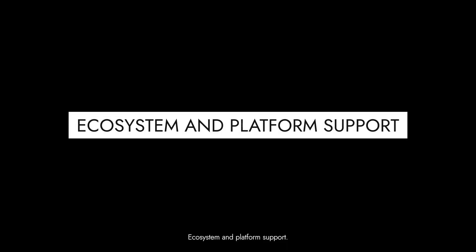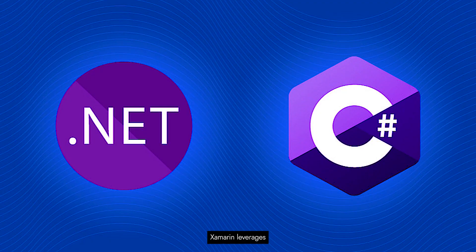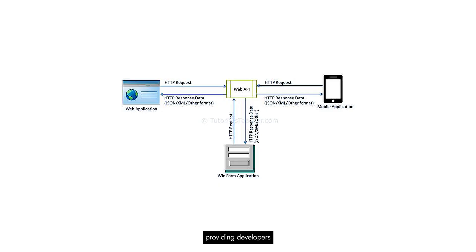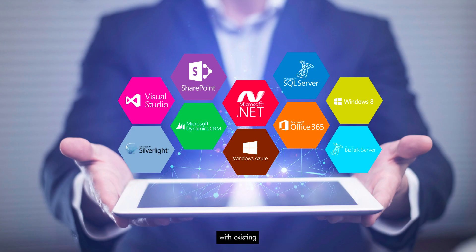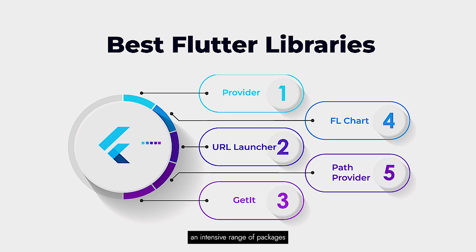Now let's talk about the ecosystem and platform support for Xamarin and Flutter. Xamarin leverages the vast ecosystem of .NET and C#. It integrates seamlessly with Visual Studio, providing developers with comprehensive tools and access to native APIs and libraries. This allows for deeper integration with existing Microsoft technologies. Flutter, backed by Google, offers outstanding integration with various Google services. Also, the Flutter ecosystem provides an extensive range of packages and libraries, permitting developers to implement complicated functionalities more effectively.